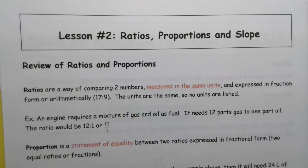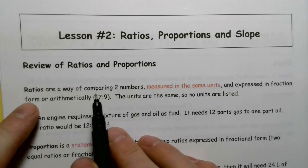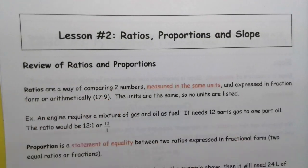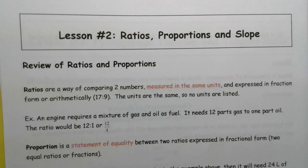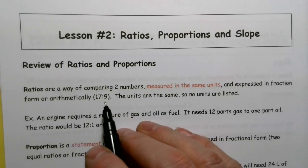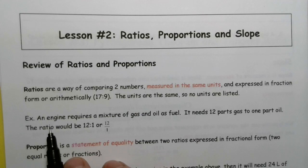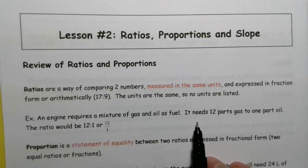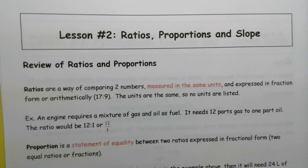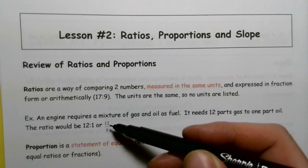First, we're going to take a look at ratios and proportions. Ratios are a way of comparing two numbers measured in the same units. Measured in the same units is really important. Sometimes you're going to see ratios that are not in the same unit, and that's okay, as long as you're very clear with what the units are. But for the most part, when we're doing the operations here, we want them to be in the same units. Here's an example: An engineer requires a mixture of gas and oil as fuel, requires 12 parts gas to one part oil. So we're looking at 12 to 1, or as a fraction 12 over 1.